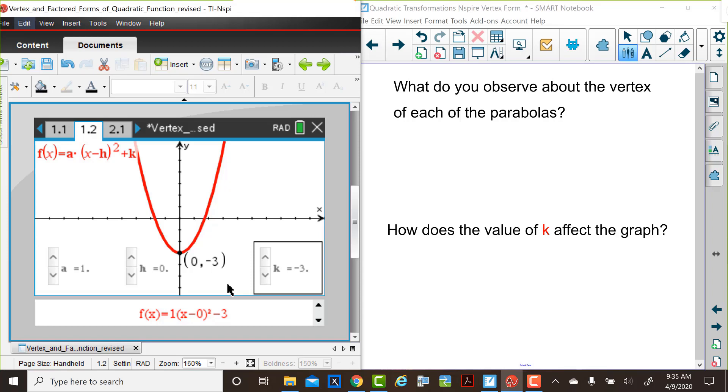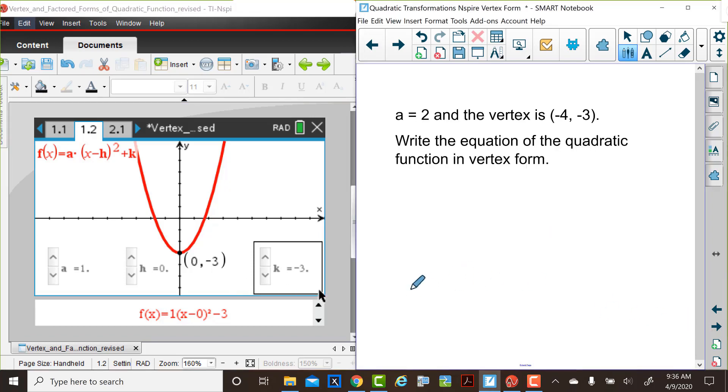Now let's put these pieces together. Here's a question to think about. Suppose you had a parabola whose a value is equal to 2, and the vertex is at (-4, -3). We'd like to ask you to think about what would the equation of the quadratic function in vertex form look like. And now ask you to pause the video and write down the equation of this quadratic function in vertex form.